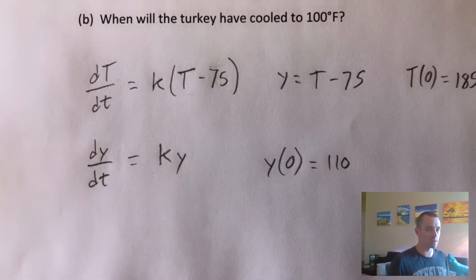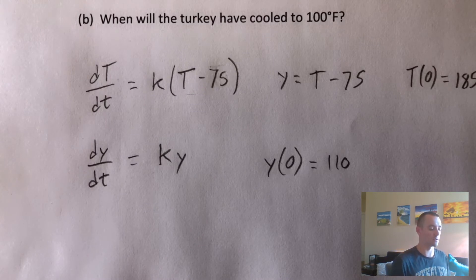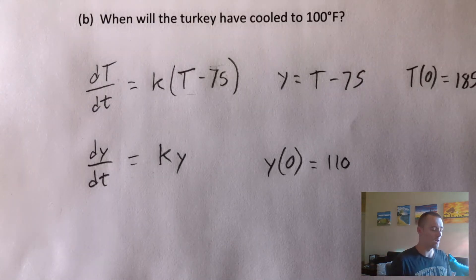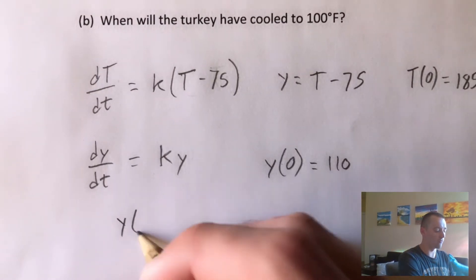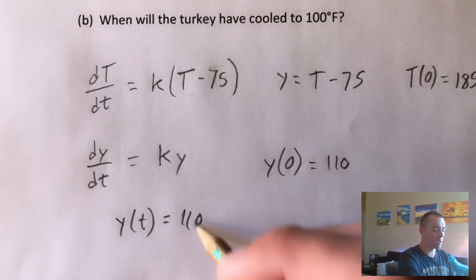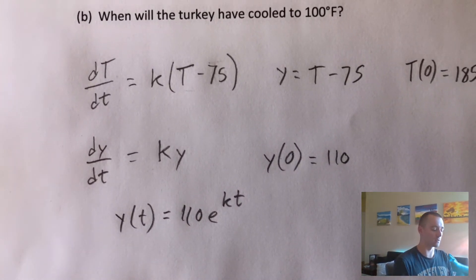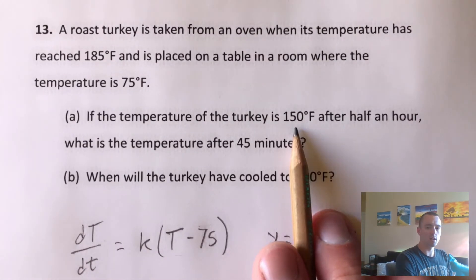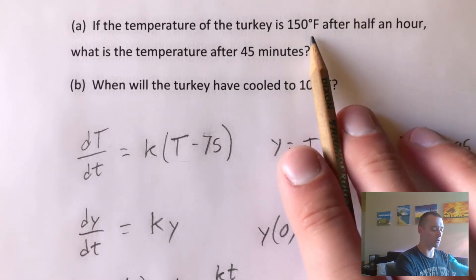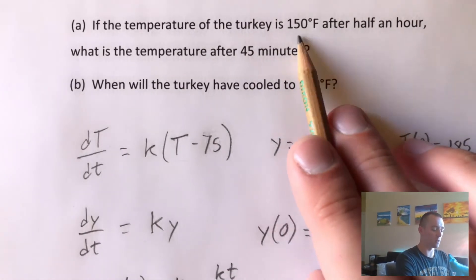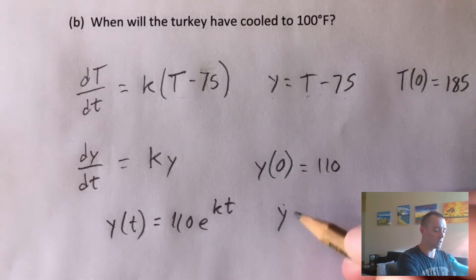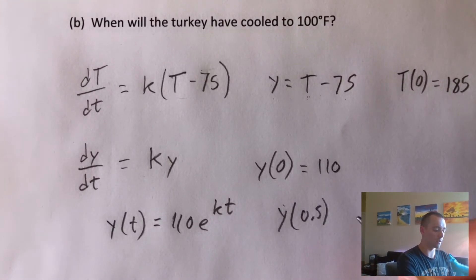We can use this with our exponential growth and decay formula to create a function, and then easily use that function to figure out parts A and B. For exponential growth and decay, if we have an initial value problem that looks exactly like this, we know right off the bat that our function Y(T) is going to be our initial Y value — which is 110 — times E to the K times T. Now we need to use the fact that the temperature of the turkey is 150 degrees after half an hour to figure out what K is. When T is 0.5, the temperature is 150, so Y at that point is 150 minus 75, which is 75. So when T is 0.5, Y is 75.